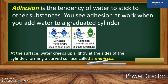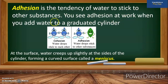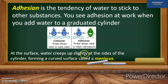Adhesion is the tendency of water to stick to other substances. You see adhesion at work when you add water to a graduated cylinder — at the surface, water creeps up slightly at the sides of the cylinder, forming a curved surface called a meniscus.